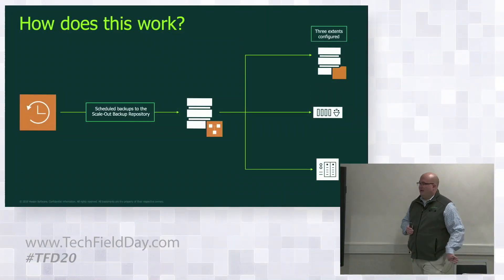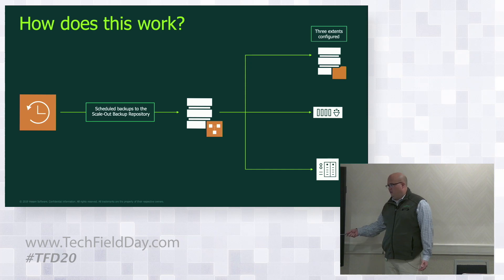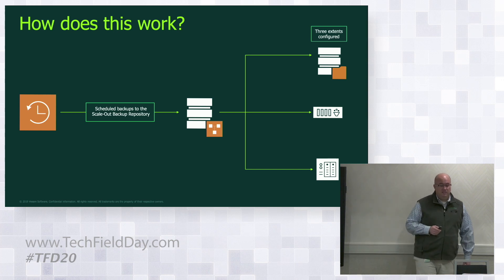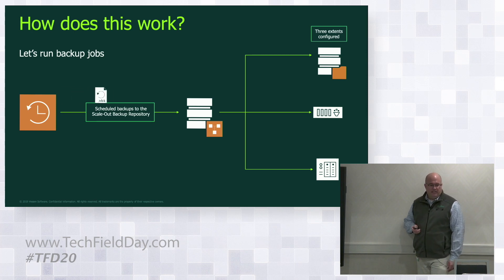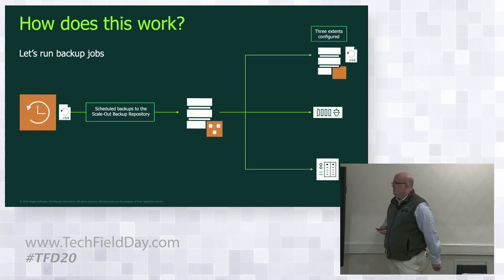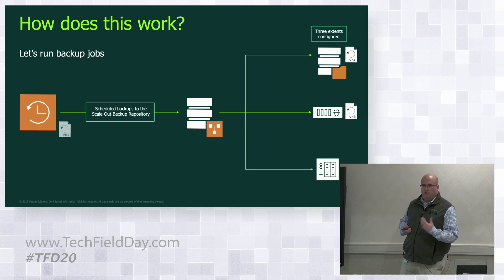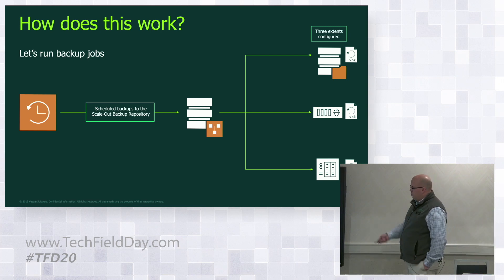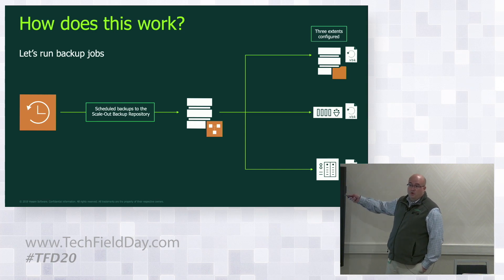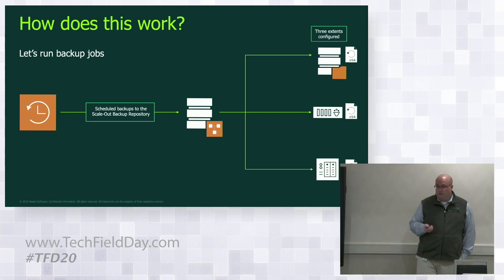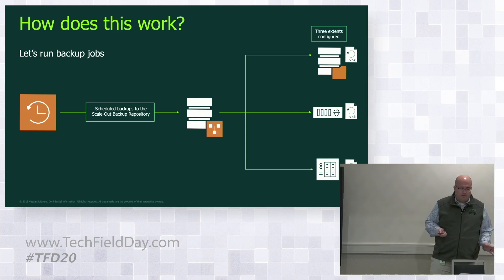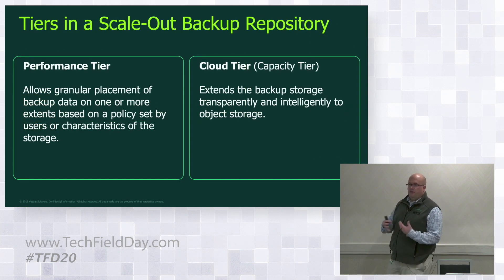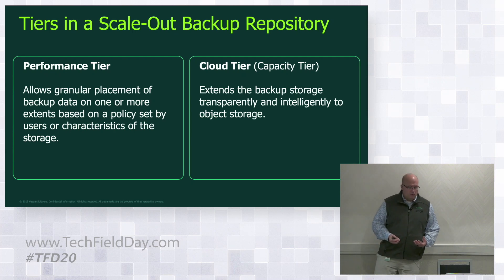We can do some amazing things. For example, I can say I only want to put my full backups on the dedupe appliance because I'm going to get better storage efficiency, and I want to put my increments on the others for better performance. I have those types of policies available. When I run the backup jobs, the magic is that the backup jobs just target the actual scale-out backup repository, and then a policy definition will say where these data files go. If one extent is not available, the backups will go to the remaining ones — which is really important so you won't miss your backup window. That's the scale-out backup repository, which we call the performance tier.